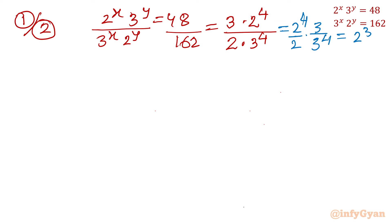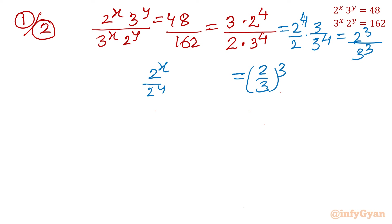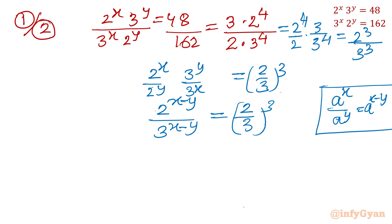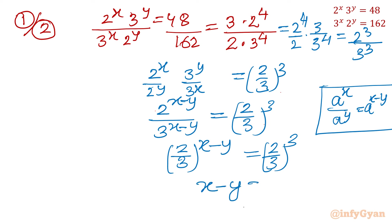This simplifies to 2^3 over 3^3, so the RHS is (2/3)^3. For the LHS, rearranging gives 2^x over 2^y times 3^y over 3^x. Using the property a^x over a^y equals a^(x−y), this becomes 2^(x−y) over 3^(x−y), or (2/3)^(x−y). So (2/3)^(x−y) equals (2/3)^3, giving us x minus y equal to 3.